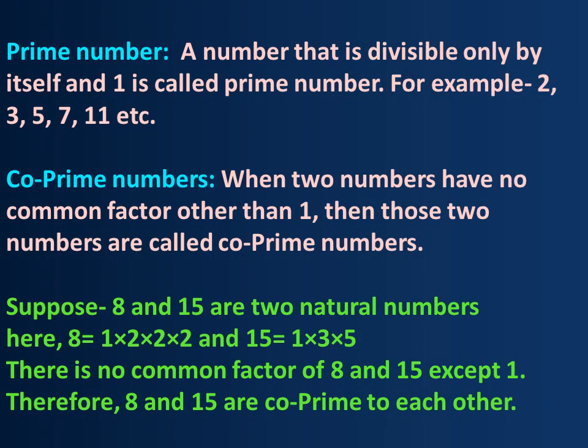The next topic is prime number, composite number, and coprime number. I have already discussed prime, coprime, and composite numbers elaborately in a previous video — the link will be in the description box. For now: a prime number is a number that is divisible only by itself and one. For example, 2, 3, 5, 7, 11, etc.